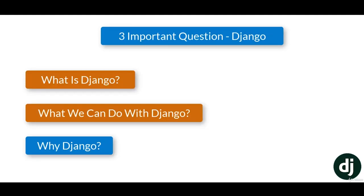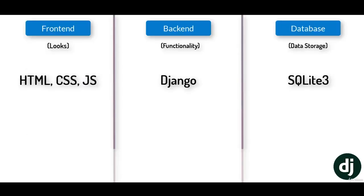Now you might have answers for your first two questions. What is Django? Django is a free open source web application framework. What can we do with Django? We can build the back end of our website. Remember our website is divided into three parts — front end, back end, and database. Front end means how the website is going to look, with animations, colors, fonts. Back end means all the functionalities. Database is how you store all the data that you get from or display to a user.